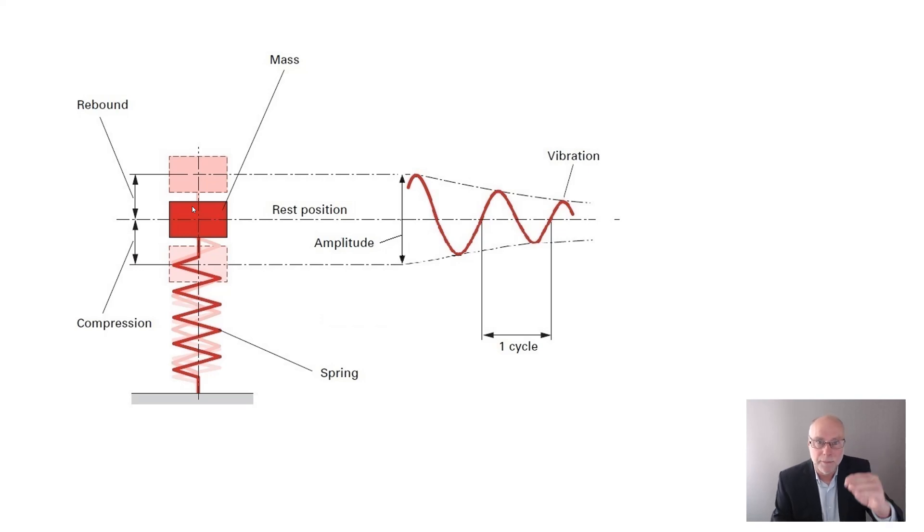And if we track the movement of those ups and downs over time, we get a waveform that looks like this. Now, the distance between that part of the wave and that part of the wave, or the peak to peak, or the trough to trough, that distance, that's one cycle occurring.